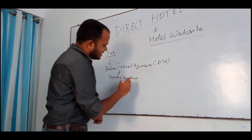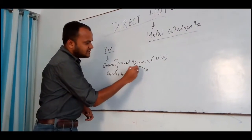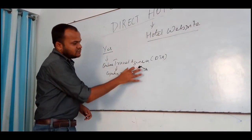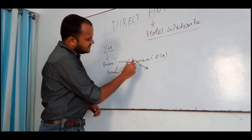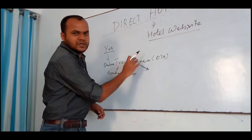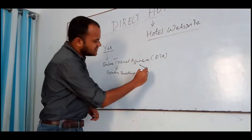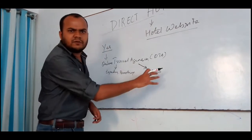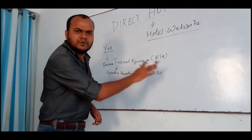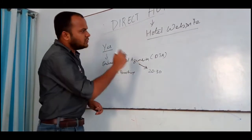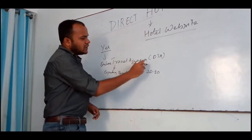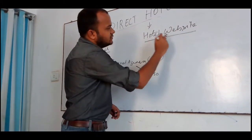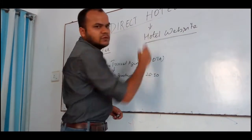The commission that goes through these OTAs — a hotel listed under an OTA — is around 20 to 30%, which is a huge chunk of revenue being eaten away by these OTAs. So in order to counter this, hotels come up with the solution known as direct hotel booking.